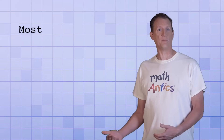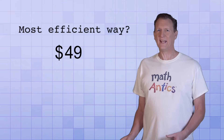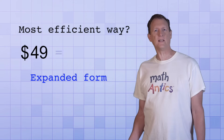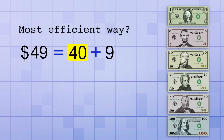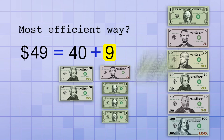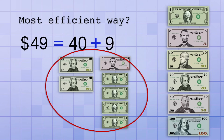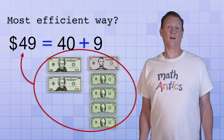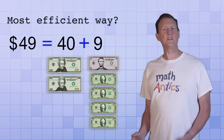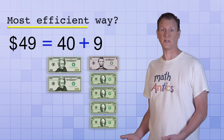Can you think of the most efficient way to represent forty-nine dollars? It helps to break the amount you want to represent up into expanded form. Forty-nine equals forty plus nine. Since there isn't a forty dollar bill, the most efficient way to represent forty dollars is using two twenties. And since there isn't a nine dollar bill, the most efficient way — still ignoring the two dollar bill — is by combining one five and four ones. So adding up the values of all these paper bills gives you forty-nine dollars. There are a lot of other combinations of bills you could use, but this is the most efficient way using the denominations that are commonly used.